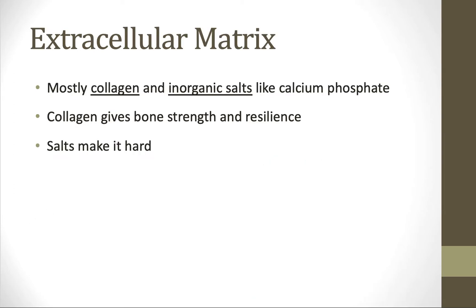The extracellular matrix is what we think of as hard bone tissue. It's outside of the cells themselves and is made up of mostly collagen and inorganic salts like calcium in the form of calcium phosphate. Collagen gives bone strength and resilience, and the salts are what make it hard. The collagen fibers go in crisscrossing patterns for extra strength, but on their own they're not hard — strong and hard are not the same thing. For example, you can have a rope that's very strong but not hard. The salts are found crystallized around the collagen to make it hard — it's like taking a rope, dipping it in water, and then freezing it. Now the rope is both strong and hard.